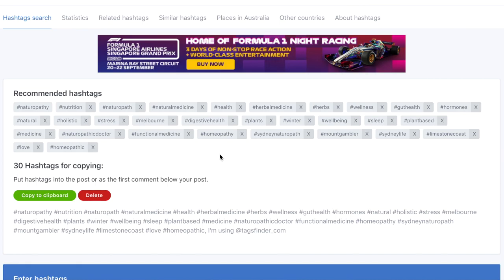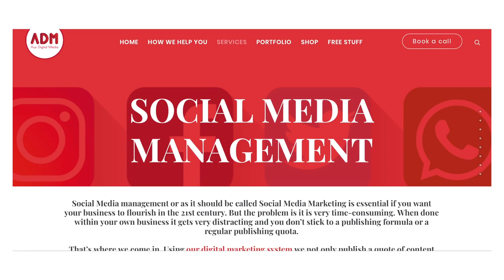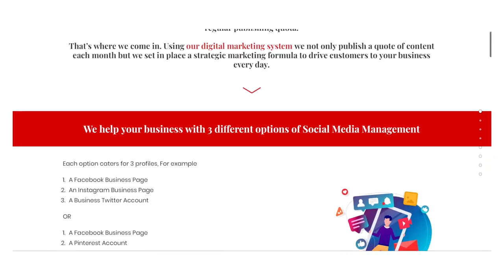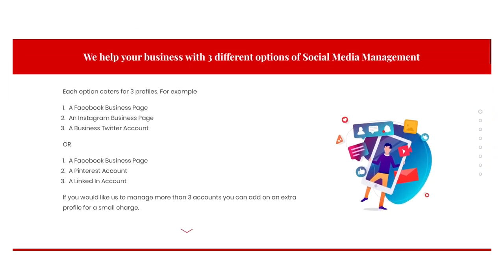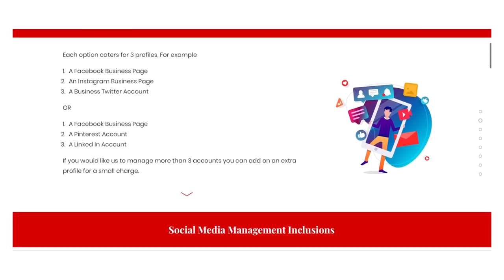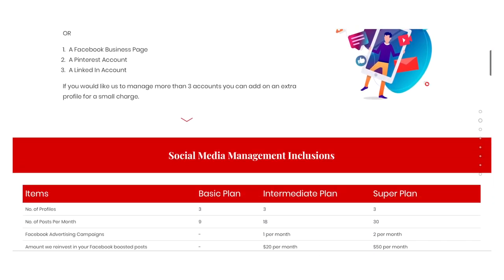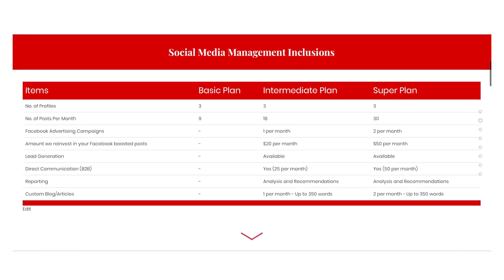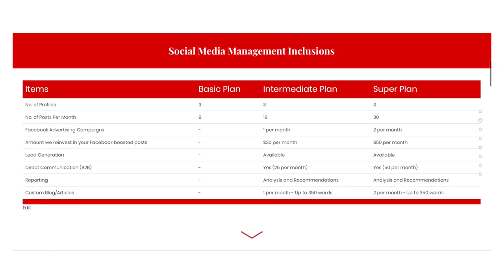Then you want to enter those keywords into a hashtag-finding algorithm — there are plenty of them free online — and that will tell you the top 30 hashtags for each keyword. Typically in social media management, we choose three to six keywords around your product or service, put them into an algorithm, and it tells us the top 30 hashtags.